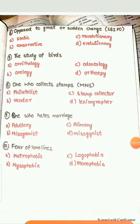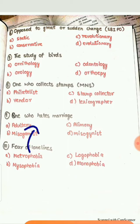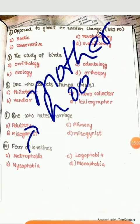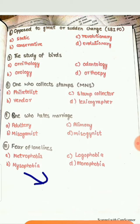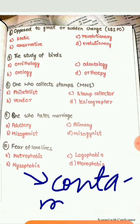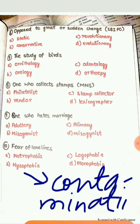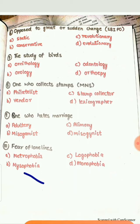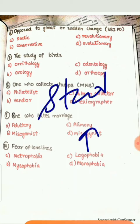Our tenth question is: Fear of loneliness is known as? The options are: A. Metrophobia, B. Mesophobia, C. Logophobia, or D. Monophobia. The correct answer is D. Monophobia. Metrophobia means phobia of motherhood. Mesophobia means phobia of contamination or filth. Logophobia means phobia of studying or reading.